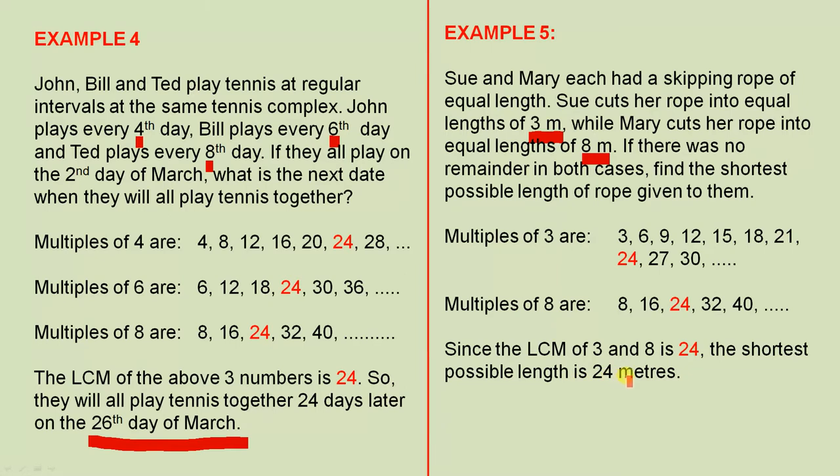So how straightforward is that? So for example, if Sue cuts her rope into lengths of 3 metres, and the rope is 24 metres long, she will have 8 lengths, because 24 divided by 3 is 8. Mary cuts her rope into lengths of 8 metres, so she will have 3 equal lengths, because 24 divided by 8 is 3.